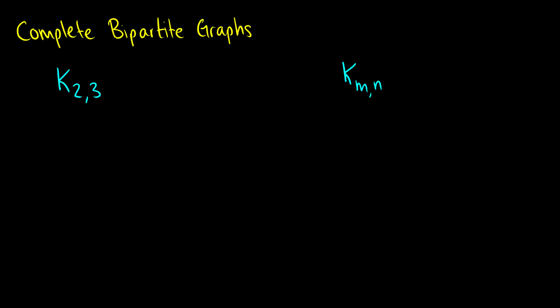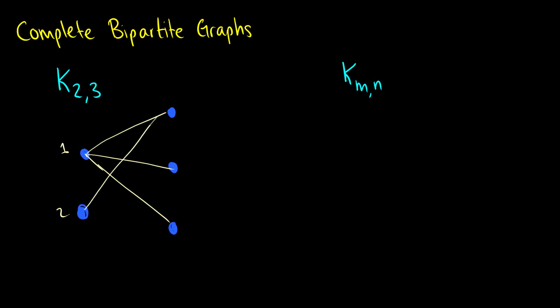Before we talked about complete graphs; we also have complete bipartite graphs. Take k_{2,3}: there are two vertices on one side and three vertices on the other side. Each vertex on the left goes to each of the vertices on the right. So vertex one connects to all three on the right, and vertex two also connects to all three on the right. This is the complete bipartite graph k_{2,3}.